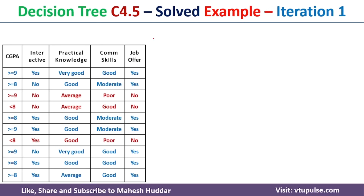Whenever we want to build a decision tree, we need to start with the root node. The question is which attribute should be selected as a root node — whether it should be CGPA, interactiveness, practical knowledge, or communication skill. To make a decision between these attributes, we need to calculate something known as gain ratio. To calculate gain ratio, we need some other metrics, which we will calculate step by step.